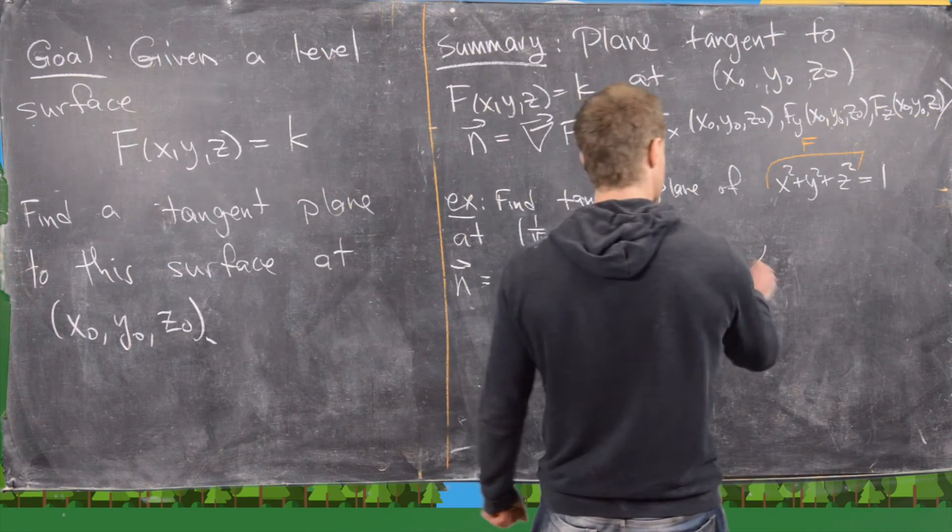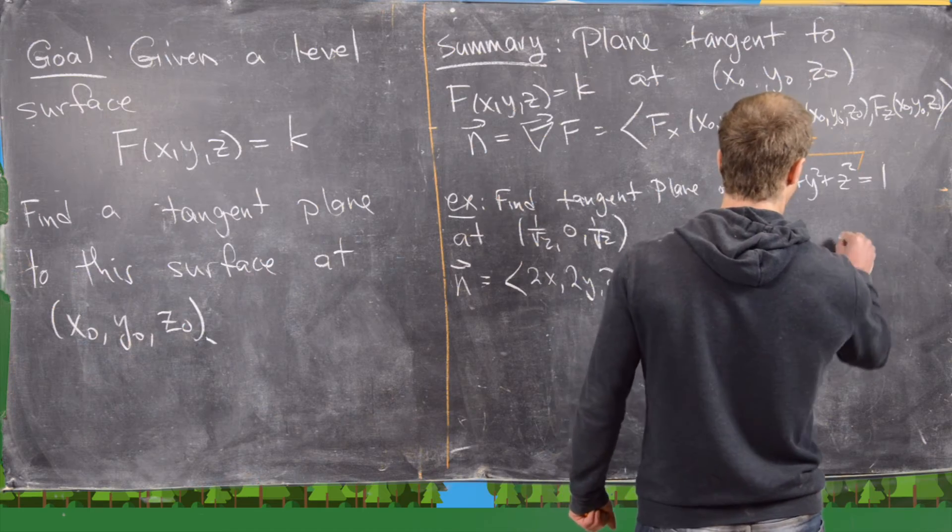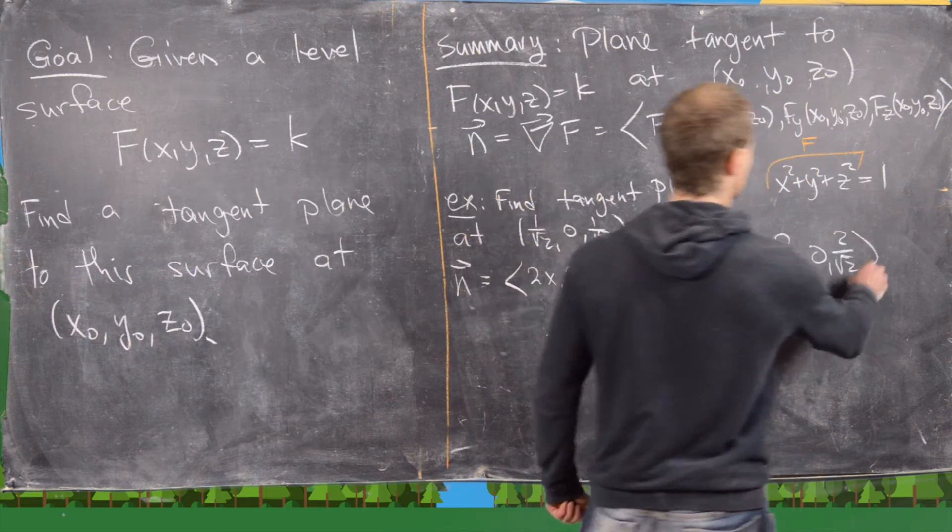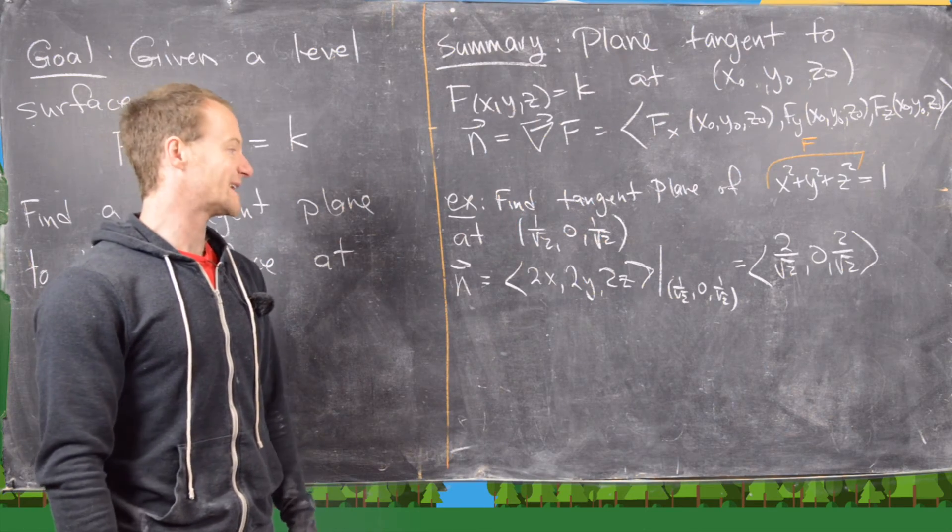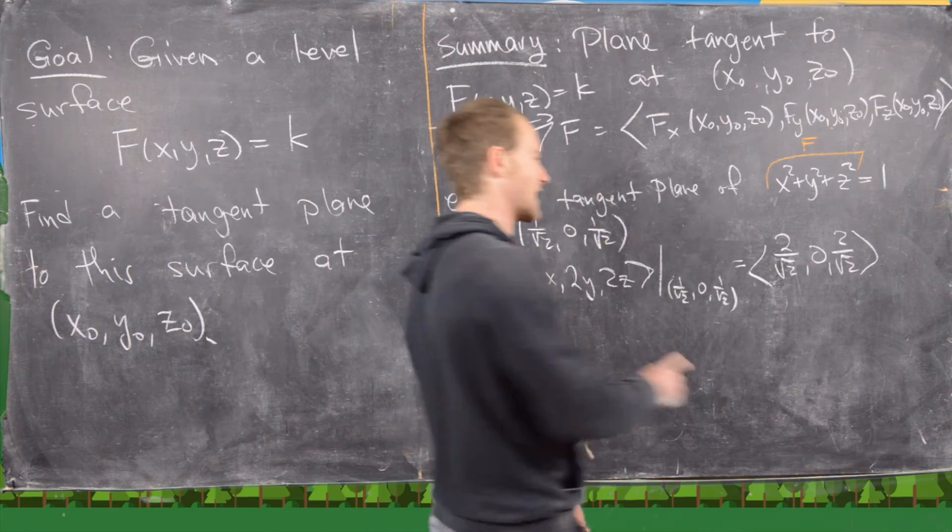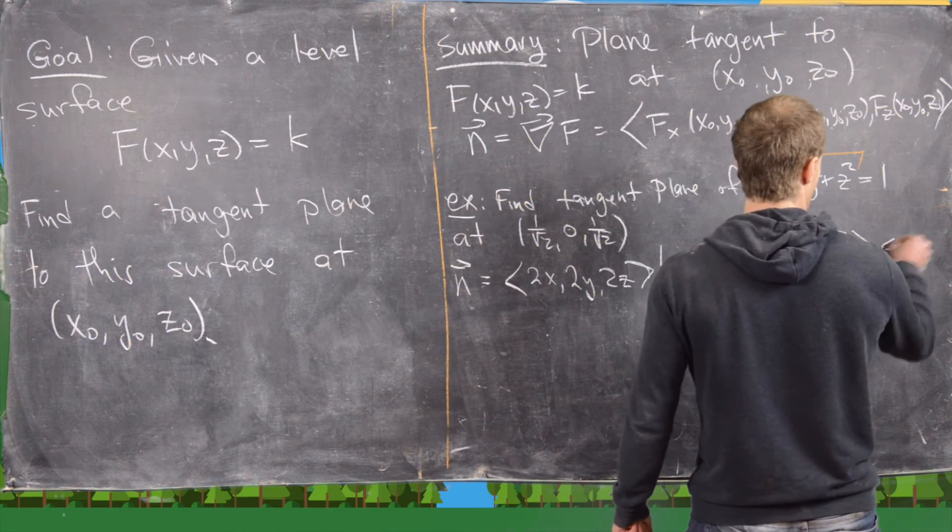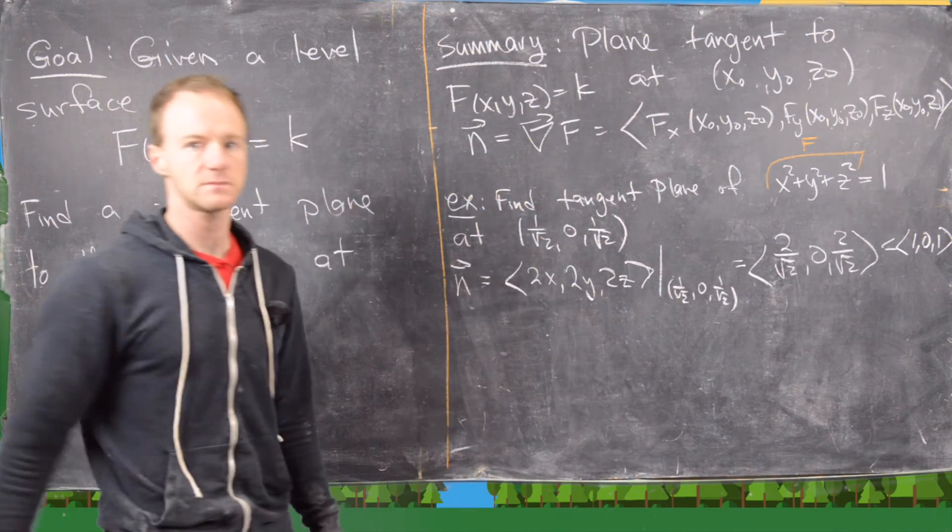But now notice that's going to give us 2 over root 2, 0, 2 over root 2. But we can scale that because all we want is a normal vector. We don't actually care about its magnitude. Notice we can scale that down to 1, 0, 1.